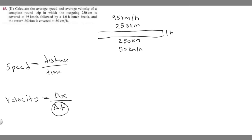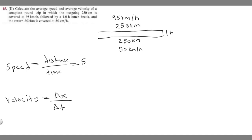The first thing we want to do is figure out the total time this trip took. We know the total distance: 250 kilometers going out and 250 kilometers back, so the total distance is 500 kilometers. But we don't know how long it took, so that's what we need to calculate.